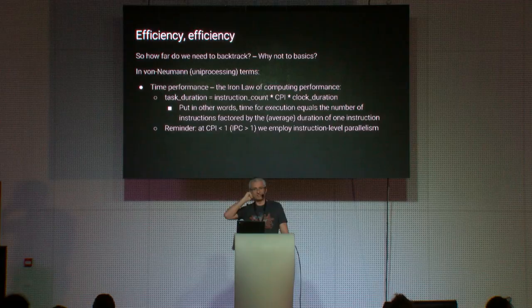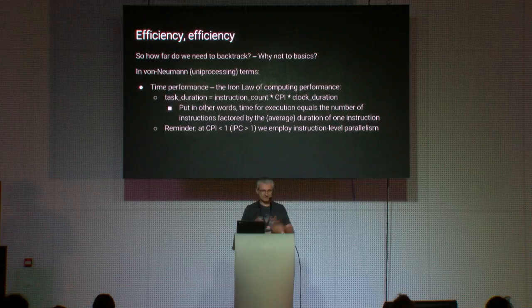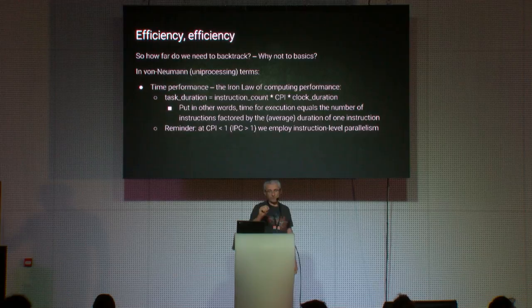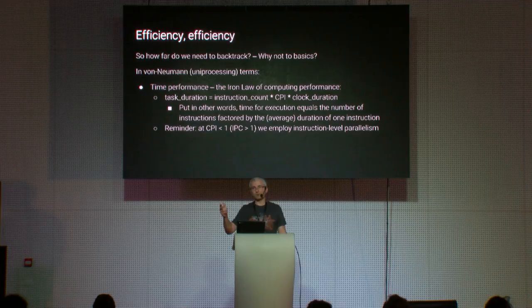At the start of our journey in CPU architectures, there is the fundamental law of performance of sequential computing — the Iron Law of computing. The Iron Law states that task duration equals the instruction count multiplied by clocks per instruction, multiplied by the individual clock duration. In plain English: the time a task takes to execute equals the dynamic instruction count multiplied by the average duration of each individual instruction. At clocks per instruction less than one — or instructions per clock greater than one — we are already taking advantage of instruction-level parallelism.